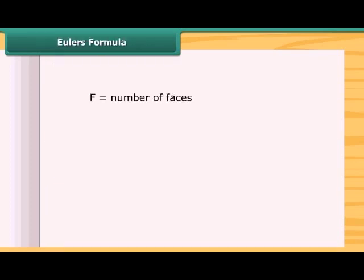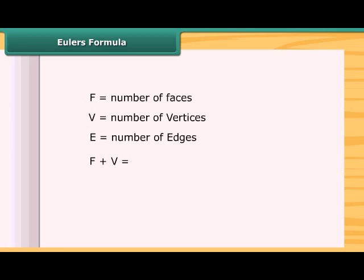If F stands for number of faces, V stands for number of vertices, and E stands for number of edges, then the Euler's formula is F plus V is equal to E plus 2. That is, F plus V minus E is equal to 2.